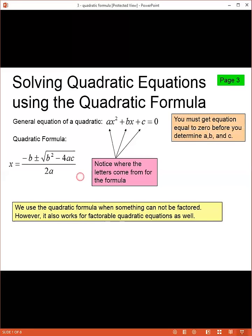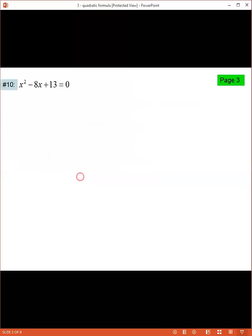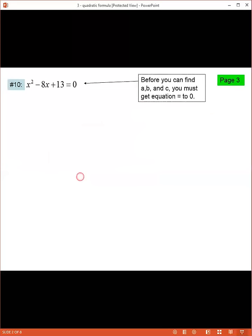Let's take a look at a specific problem. We'll look at x to the second minus 8x plus 13. Remember, the equation must be equal to zero before you can decide what a, b, and c are.